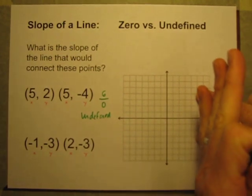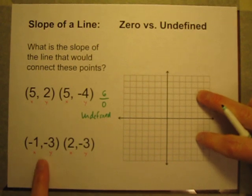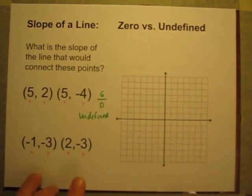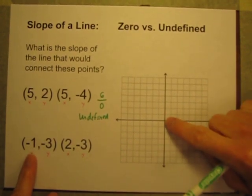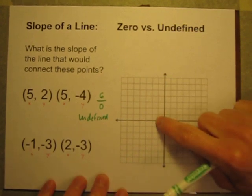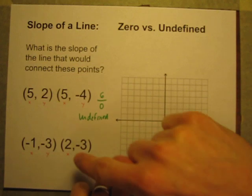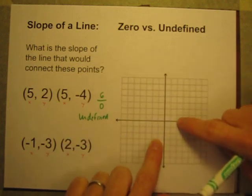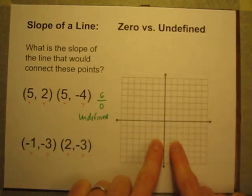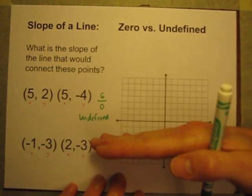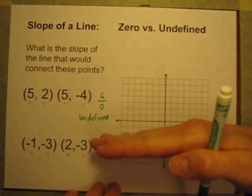If you've got two points like that, that vertical line, undefined. How about on this one? Just visualize what these points are going to look like. (-1, -3) is 1 to the left down 3. And (2, -3) is 2 to the right down 3. So I'm going to have two points here that are side by side. Connect them with a line and it's going to be a horizontal line.